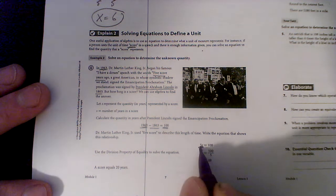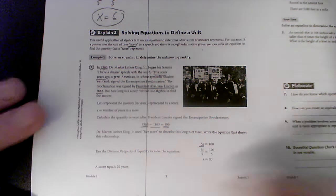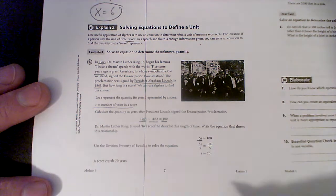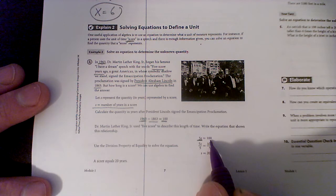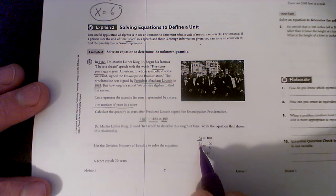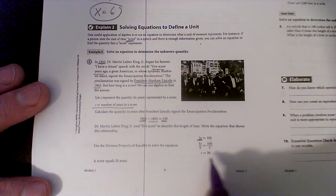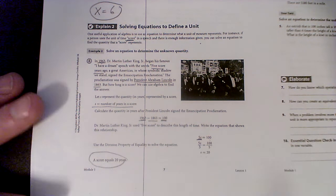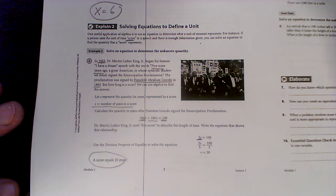So five times a score - we're going to use X for a score, right? X represents the number of years in the score - is equal to 100. And if I do an inverse operation, divide by 5, divide by 5, I find that X is 20.